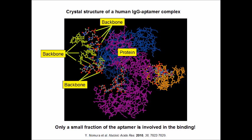In turn, the highly negatively charged nucleic acid backbone remains outside the protein-aptamer interface. This raises the question of whether the internucleotidic linkages could be made to bind to proteins as well, which would lead to nucleic acids with much greater affinity to proteins.